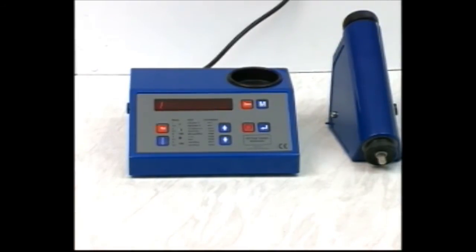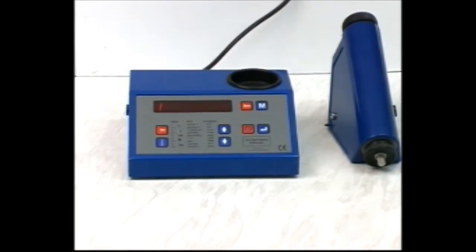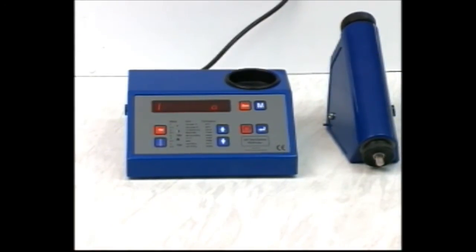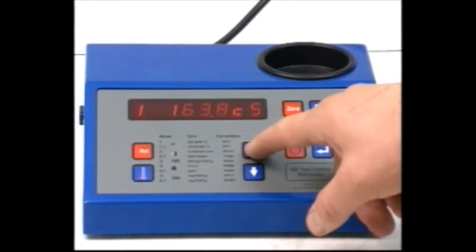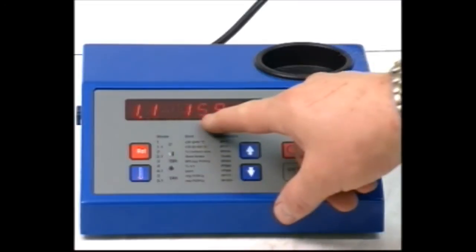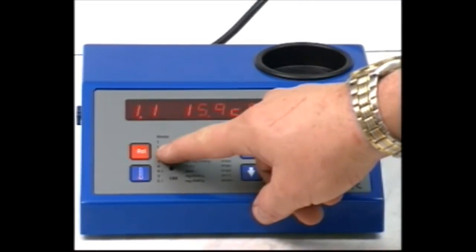The display will now give an average of the two readings in Centistokes at 40 degrees Celsius. If you need to calculate viscosity at 100 degrees Celsius, press the up arrow key at this stage to select Mode 1.1.